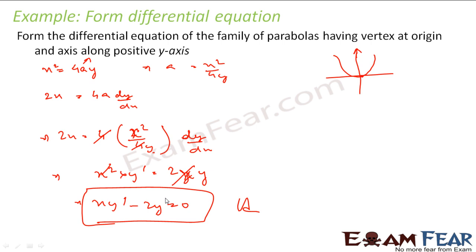The tricky part here is understanding the question — recognizing it asks for a parabola of this form, writing the equation, and understanding it has only one variable a, so we differentiate only once and substitute a from the first equation.